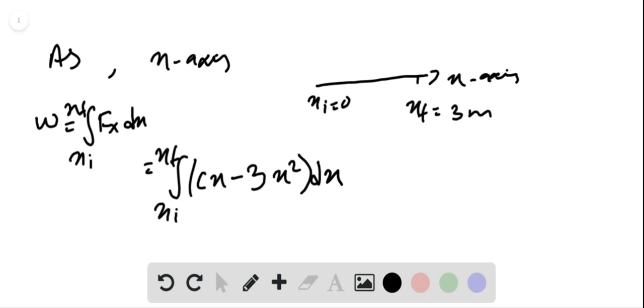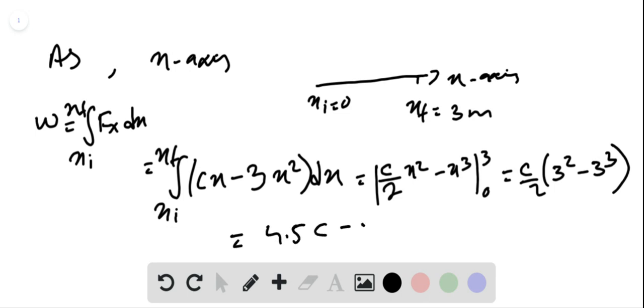When we integrate this, we get c over 2 times x squared minus x cubed, evaluated from 0 to 3. This gives us c over 2 times 3 squared minus 3 cubed, which simplifies to 4.5c minus 27.